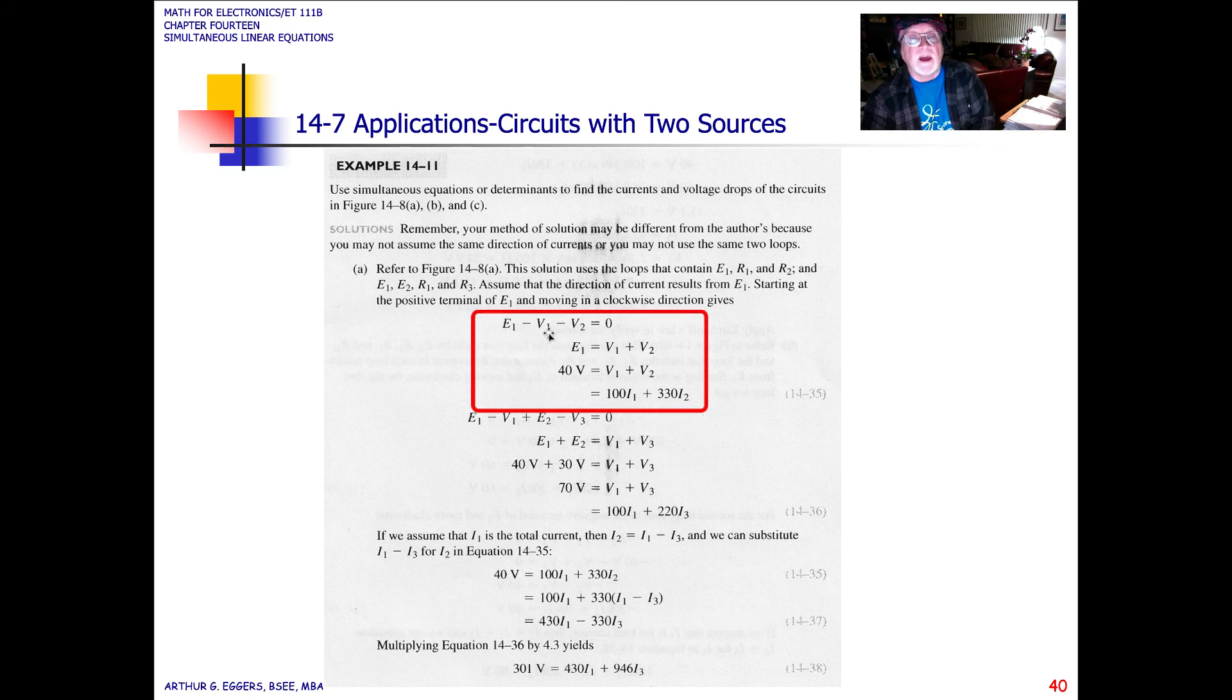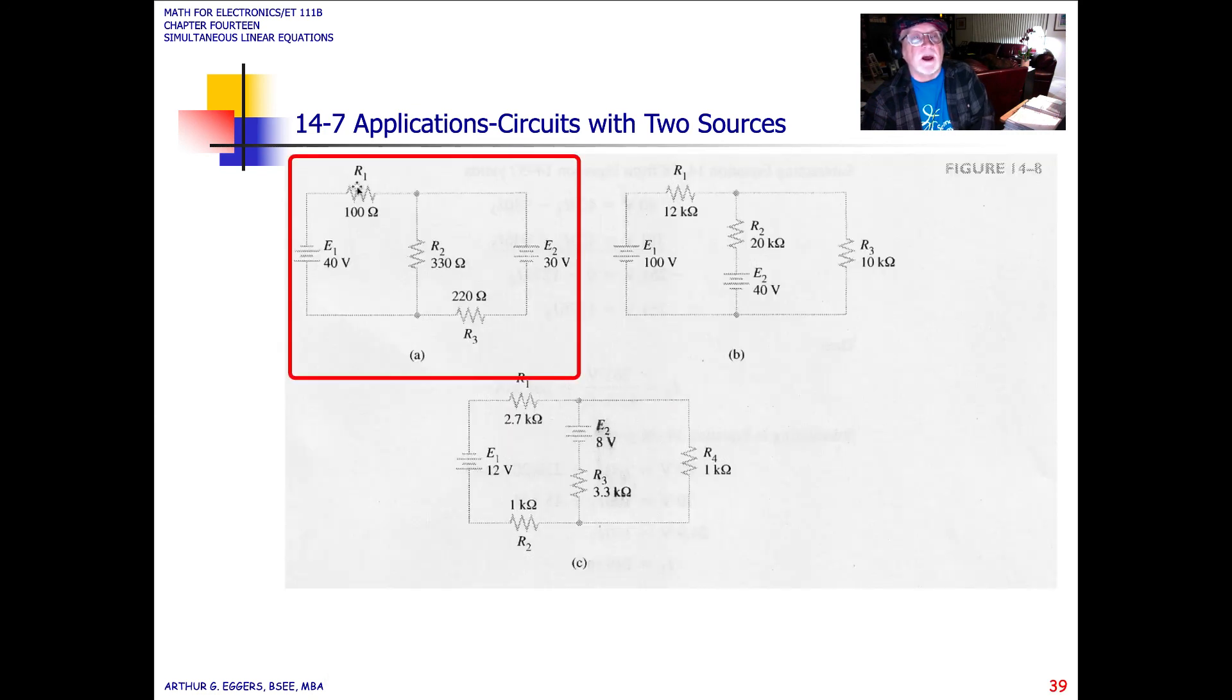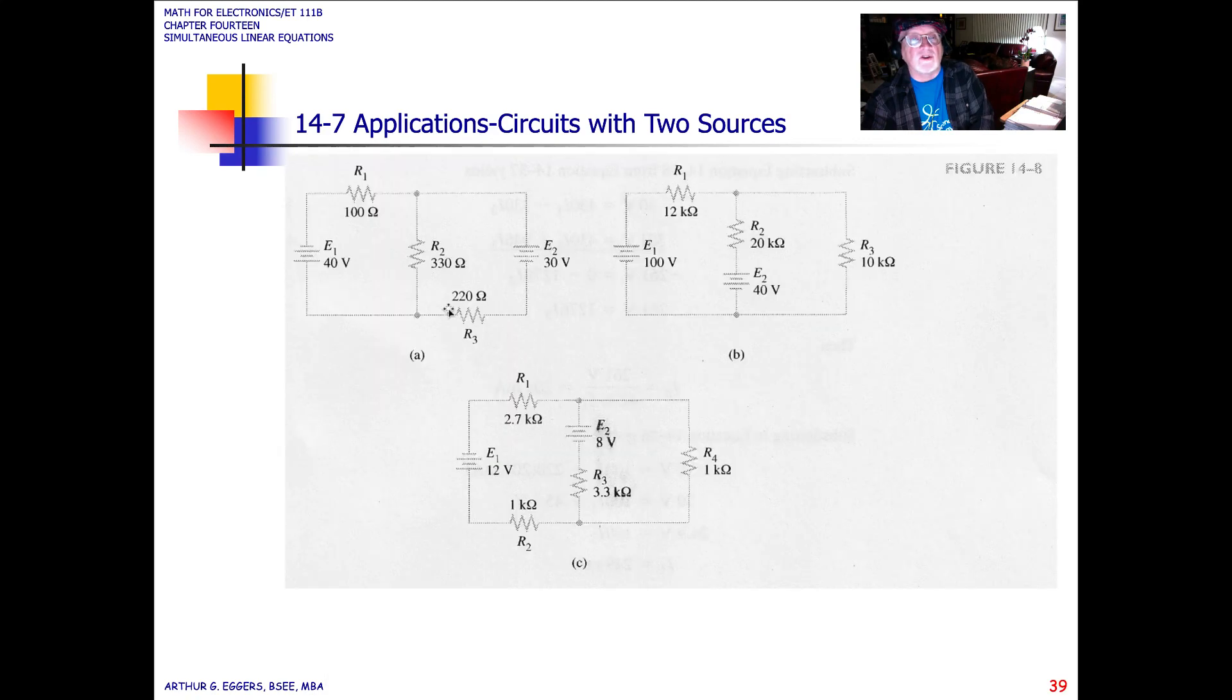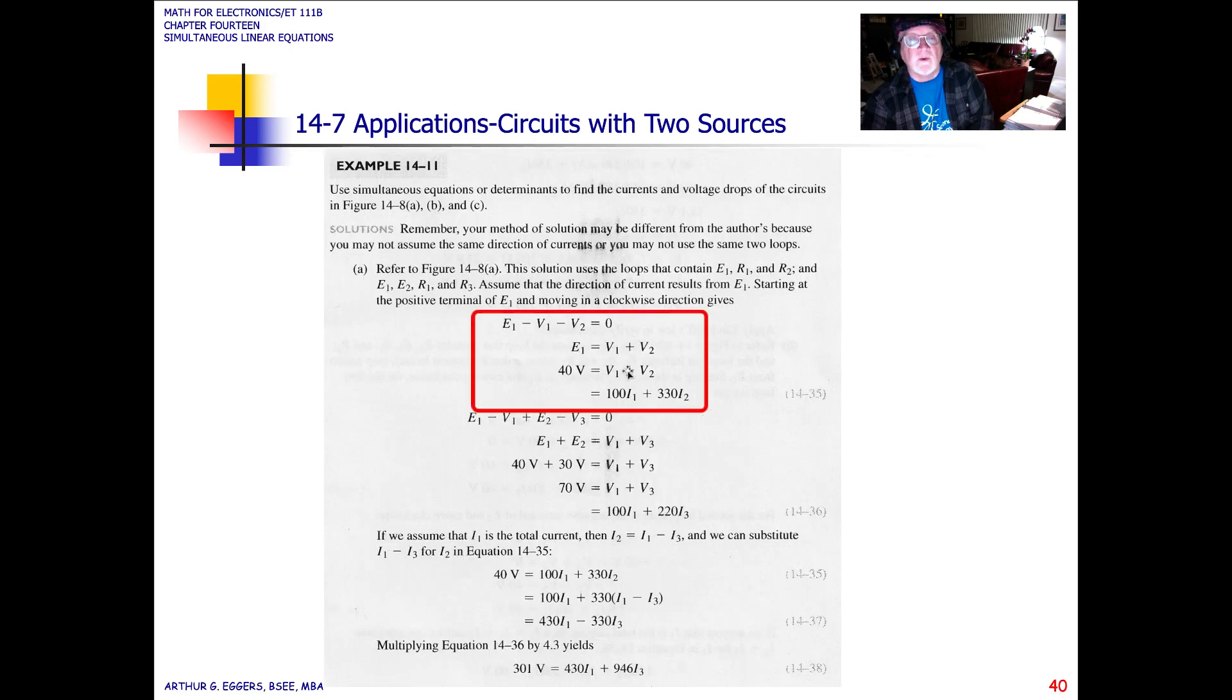So the expressions then become E1 minus V1 minus V2 equals 0. So they've done this left-hand side. E1 then is equal to the sum of the two voltage drops of V1 and V2, and 40 volts is our source. So we've got 40 volts there as our source, V1 plus V2. We end up then with an expression that says 40 volts is equal to 100 times the current I1 plus 330 times the current I2.